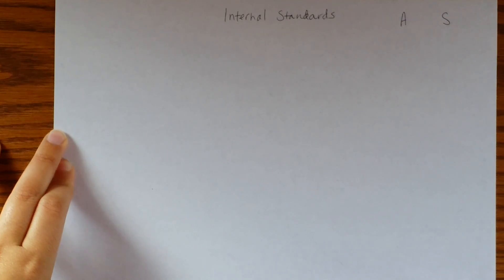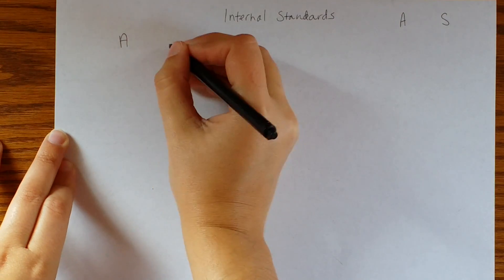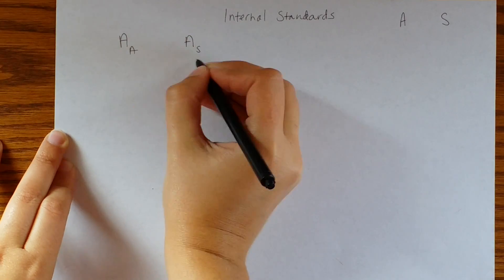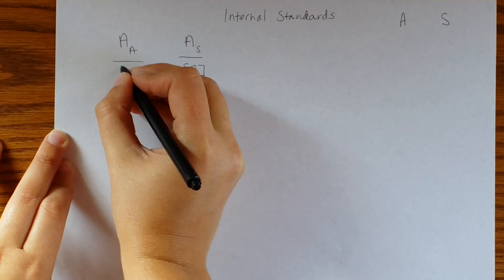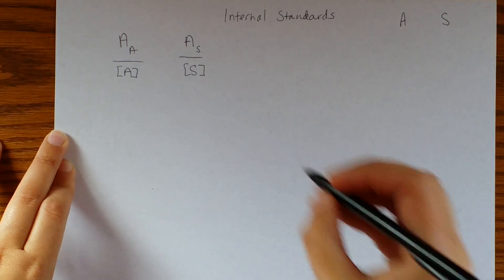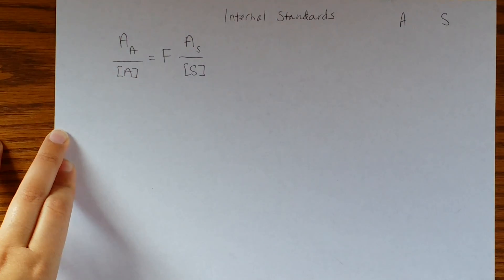Ultimately our goal is to work with the equation that we have some response, some areas for analyte and for standard, and that those things depend on concentration. So they're proportional to the concentration of the analyte or the standard, and there's just a proportion, some sort of factor between the two of these.